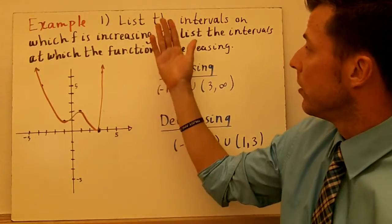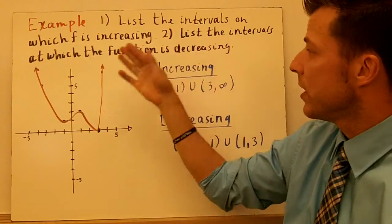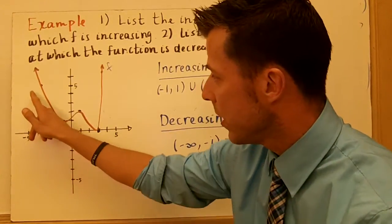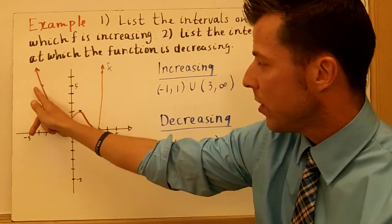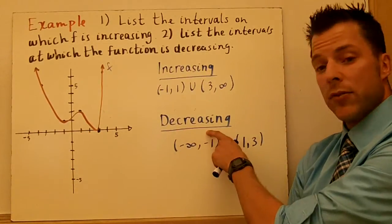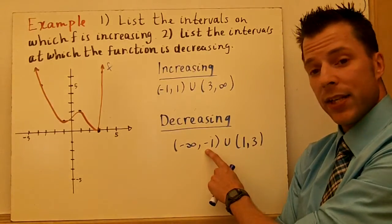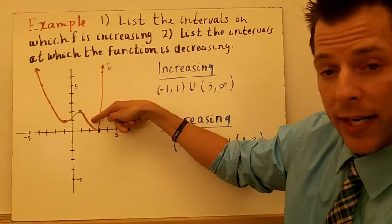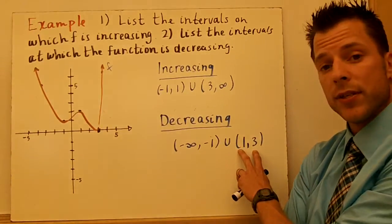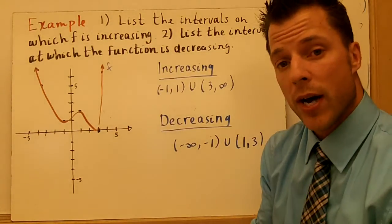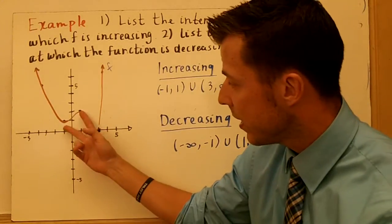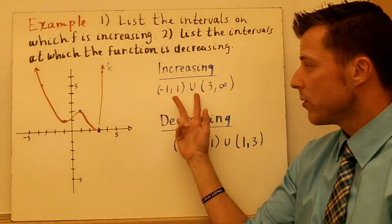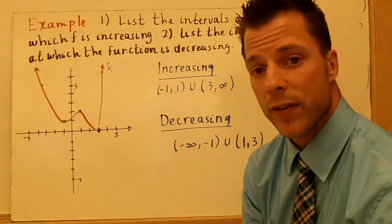Last example — list the intervals on which function f is increasing and decreasing. Looking from left to right, from negative infinity all the way to negative 1, we have a decrease. But that's not the only spot — we also have a decrease in union with 1 to 3, because as x gets bigger in that interval, y gets smaller. For increasing: from negative 1 to 1, y gets bigger as x gets bigger. And in union, when we get to 3, we see that graph shoot up to infinity. So the function increases from negative 1 to 1, in union with 3 to infinity.